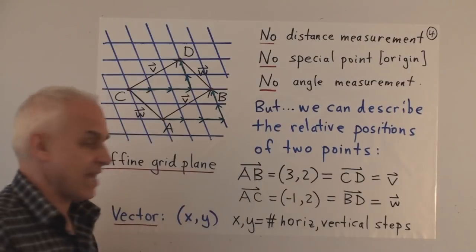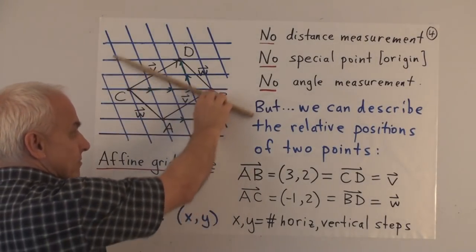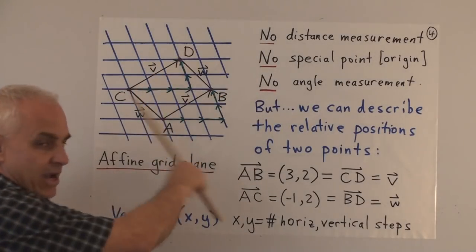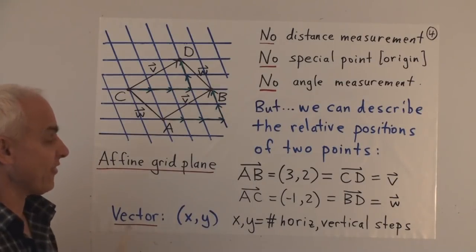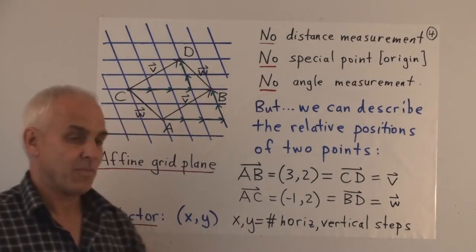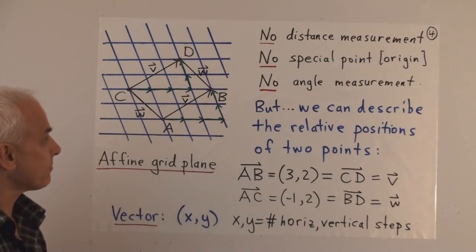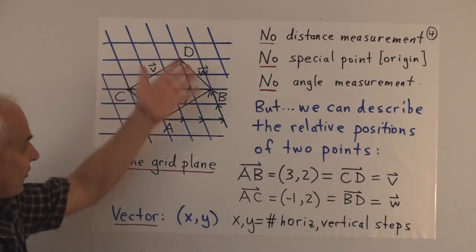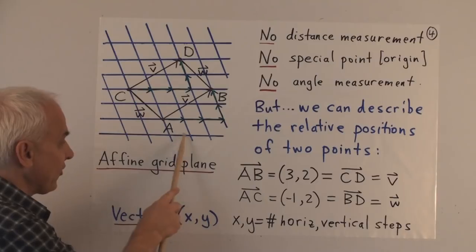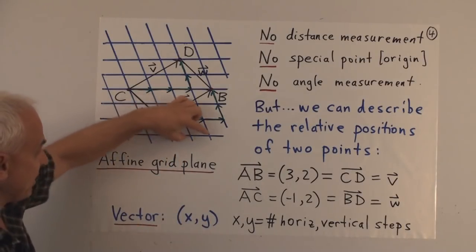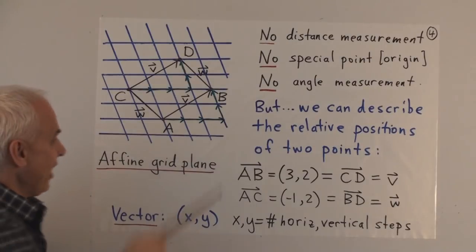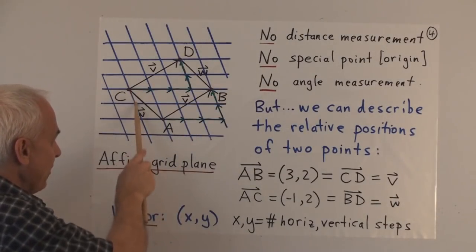When you create a grid plane, it doesn't have to look like this — you can make these lines be some different inclination, and the same with the other lines. We're allowed to choose any family of lines. The directions are somewhat arbitrary, and it doesn't matter whether your grid plane looks the same as mine. The geometry we're going to build up will look the same for everyone. In this setup, there's no distance — we're not assuming we have any ruler, and there's no way to compare one distance to another.